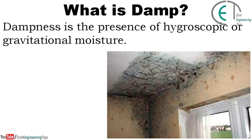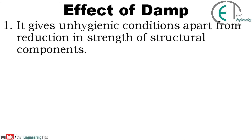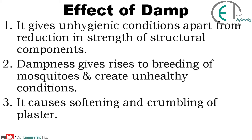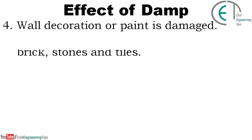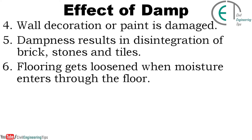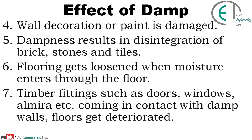Omission of DPC prevents entry of moisture into the building. Dampness is the presence of hygroscopic or gravitational moisture. The effects of damp include: unhygienic conditions and reduction in strength of structural components; dampness gives rise to breeding of mosquitoes and creates unhealthy conditions; it causes softening and crumbling of plaster; wall decoration and paint are damaged; dampness results in disintegration of bricks, stones and tiles; and flooring gets loosened when moisture enters through the floor.